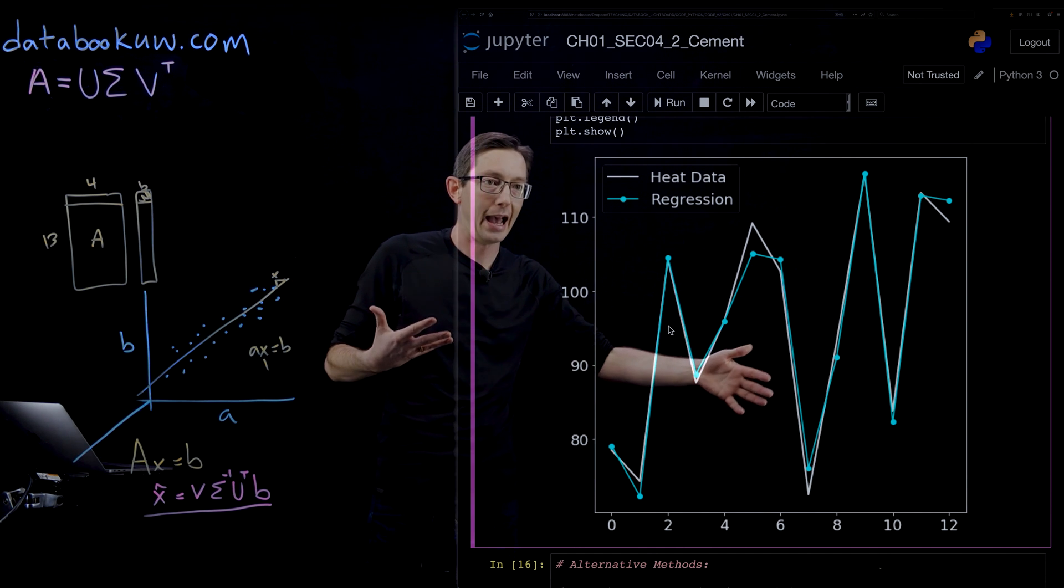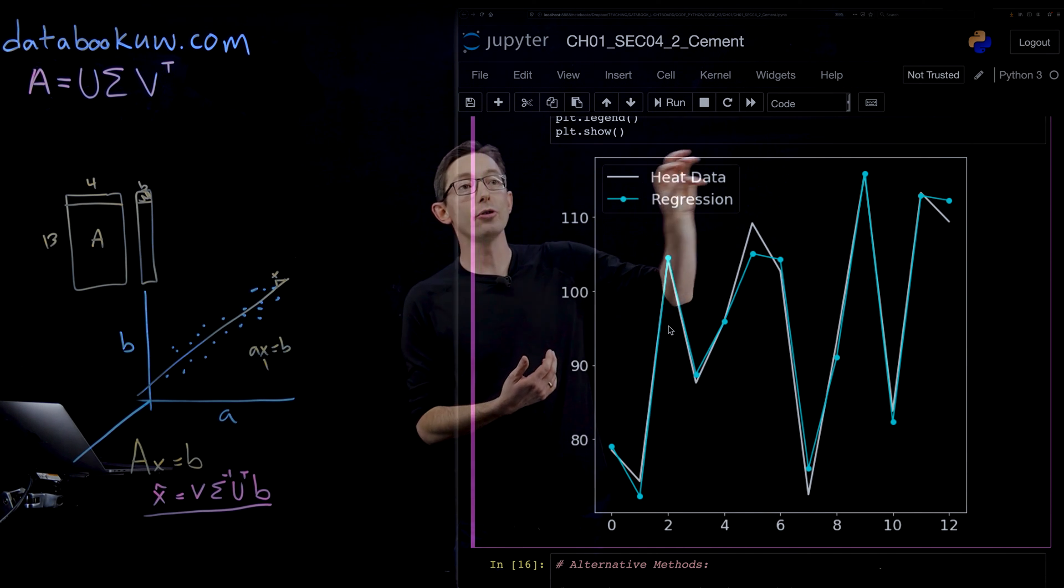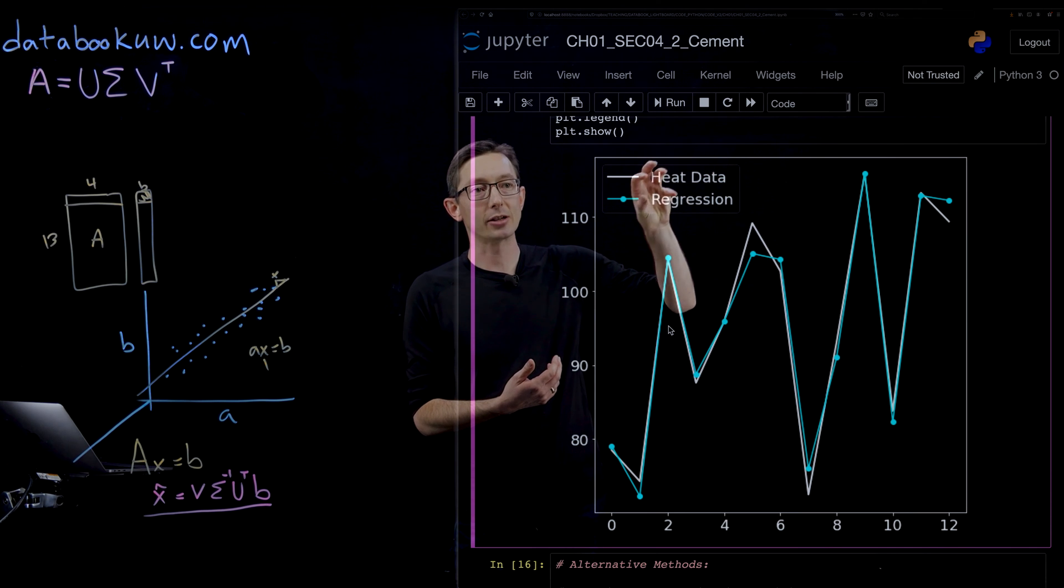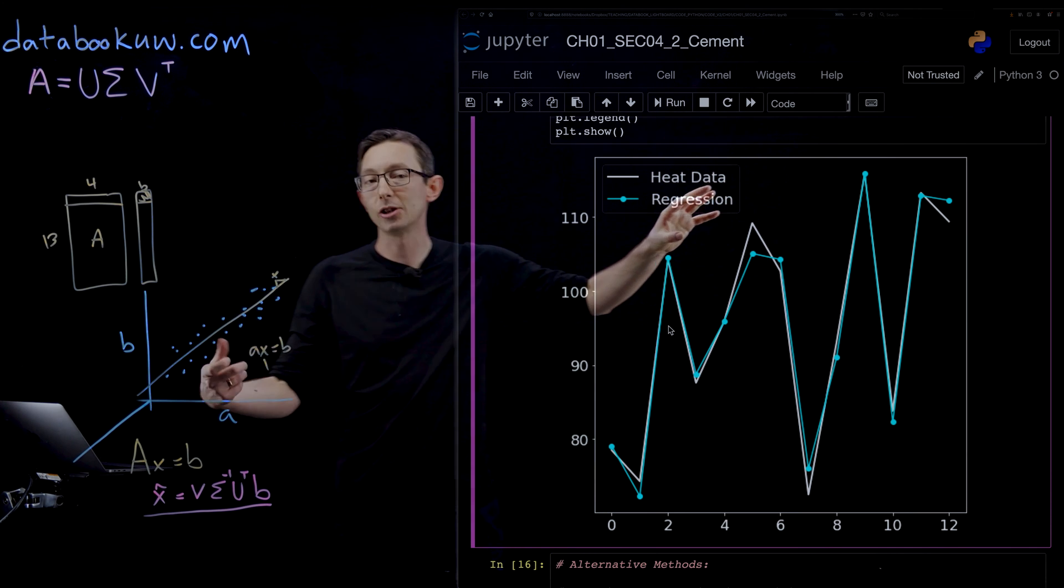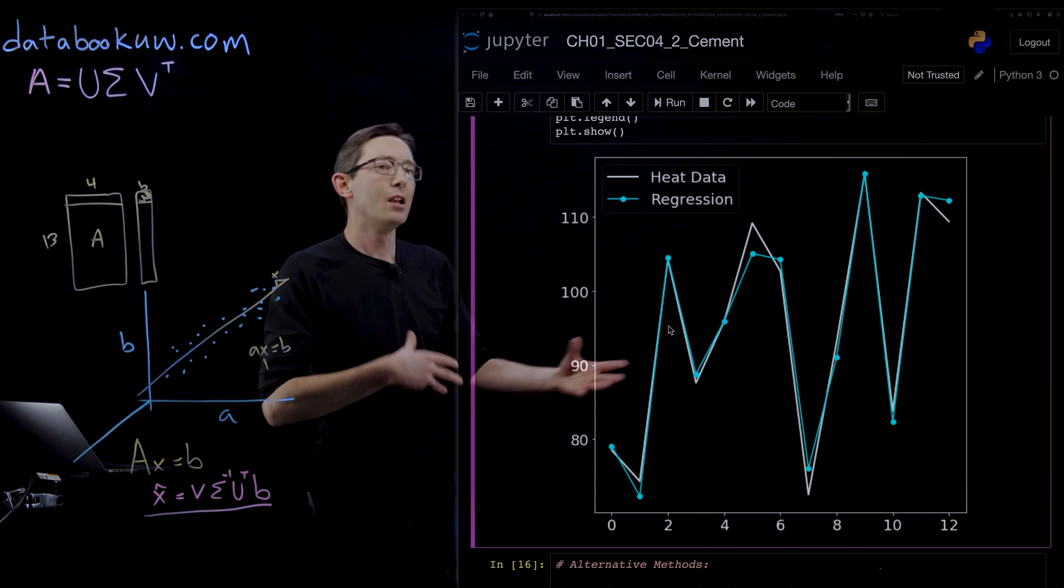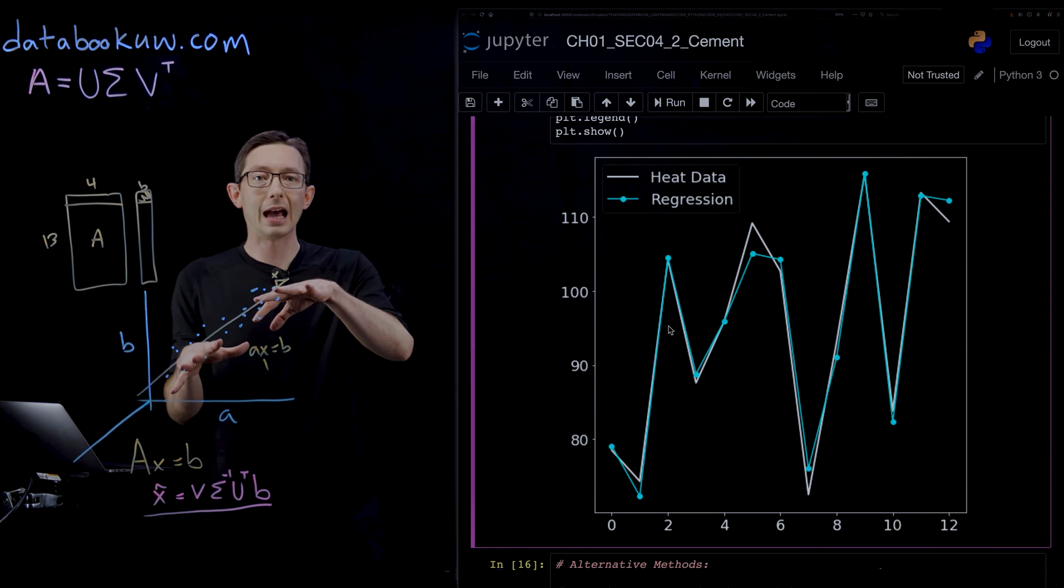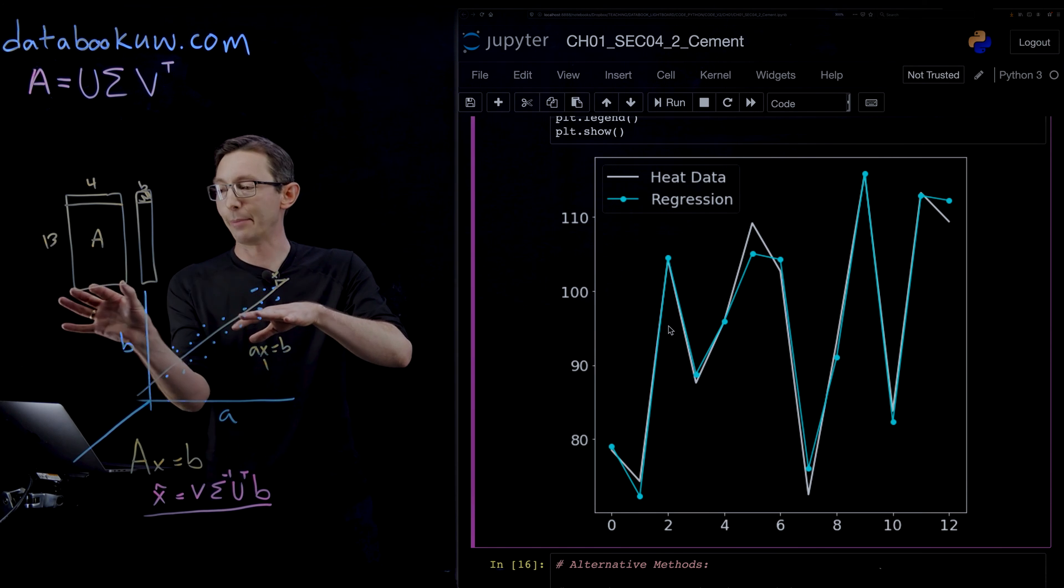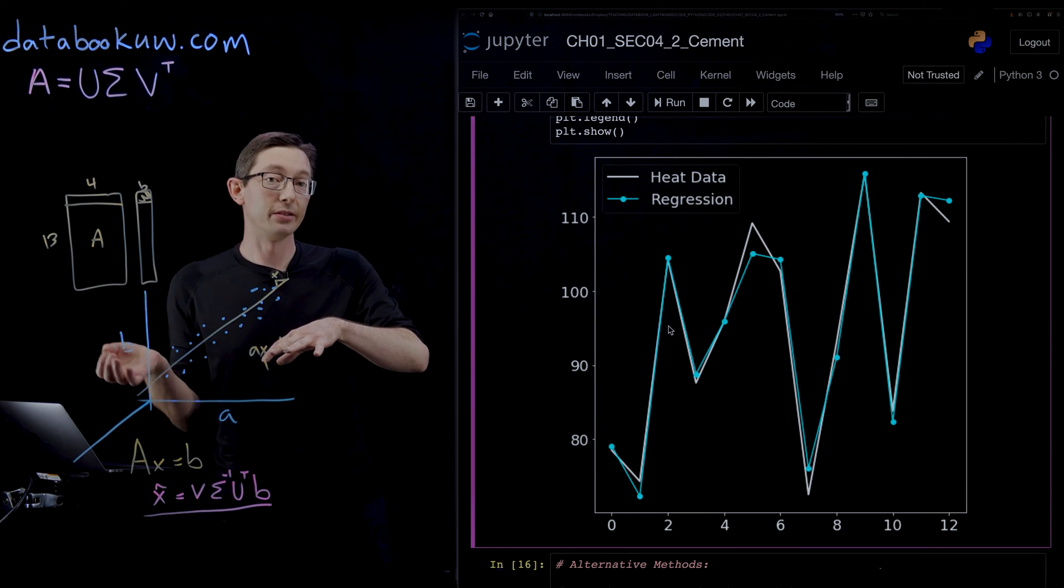What you see is that the true heat data here in white actually matches very nicely the approximation of our model, this regression model in blue. This shows that you can build a pretty good model that captures most of the mapping from the ingredient mixture to the heat generated by curing that cement.